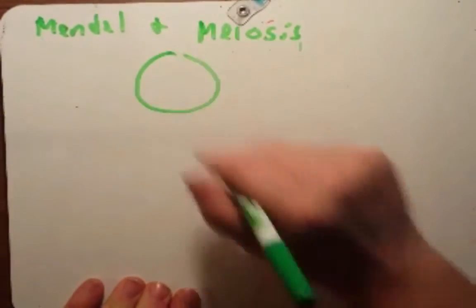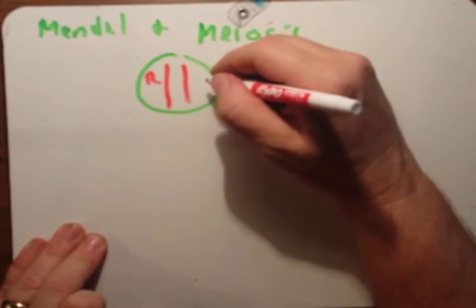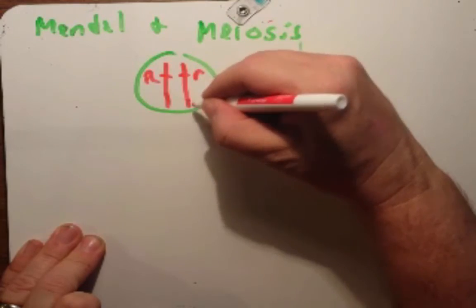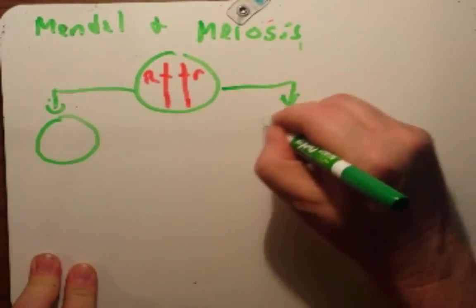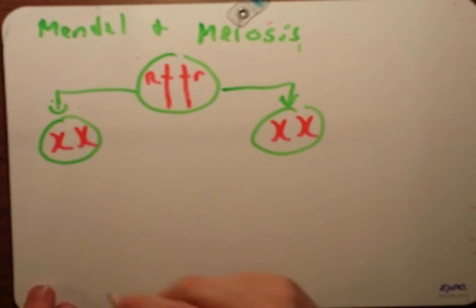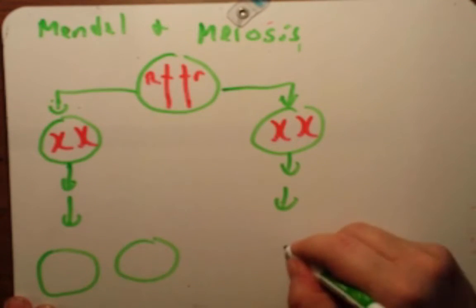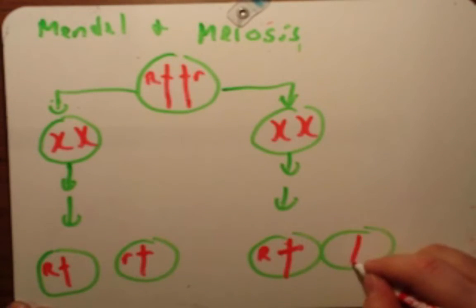In meiosis you start off with two homologous chromosomes. In this case they maybe carry these genes. Maybe one is big R allele and the other is little r allele. Through meiosis and cell division here, they will begin to copy the DNA. Then through meiosis 1 and 2, each of these cells here will produce two final gametes. In these gametes we'll have one that has a chromosome that is big R, one that has a chromosome that is little r. And same thing here, we'll have one that is big R and another one that is little r.